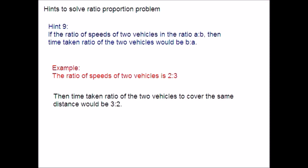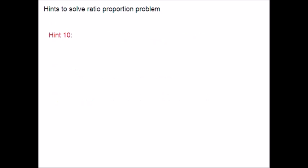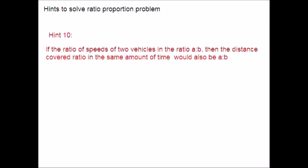Hint 10: If the ratio of speeds of two vehicles is A is to B, then the distance covered in the same amount of time would also be in the ratio A is to B. For example, if the speed ratio is 2 is to 3 and each vehicle is given 1 hour, then the distance covered by the two vehicles would be in the ratio 2 is to 3.